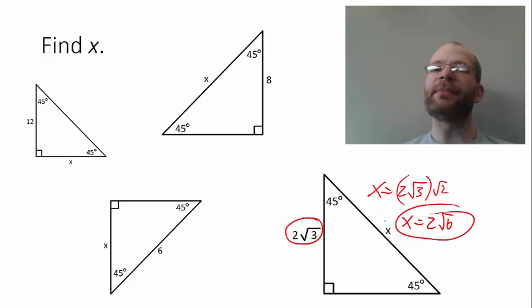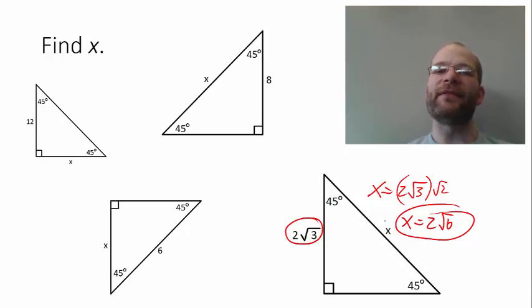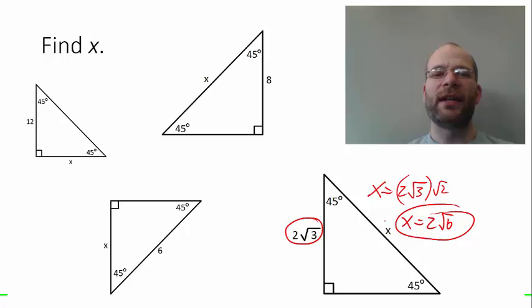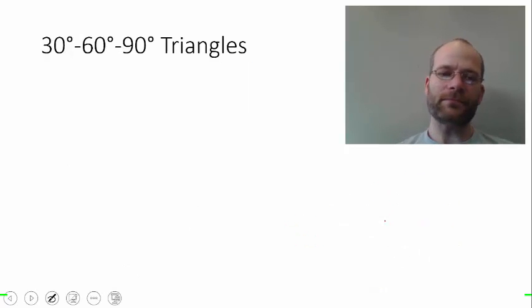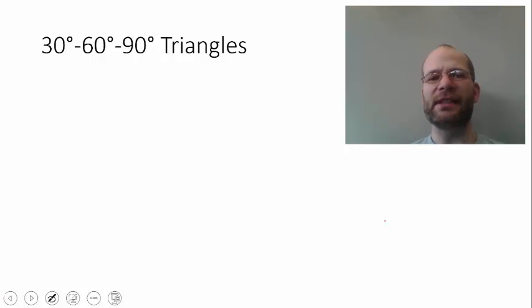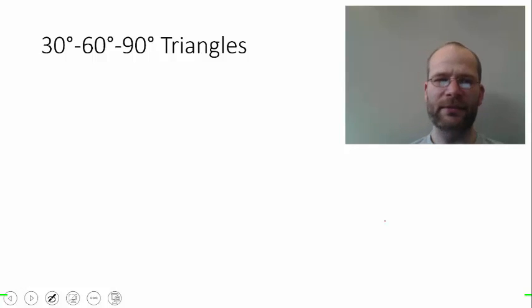So the relationship is fixed: in any 45-45-90 triangle, the legs are congruent and the hypotenuse is always the length of the leg times the square root of 2. Now let's look at 30-60-90 triangles — the second category of special right triangle.